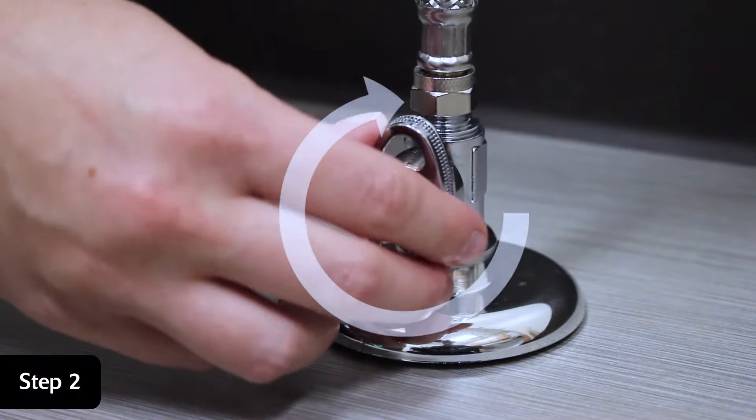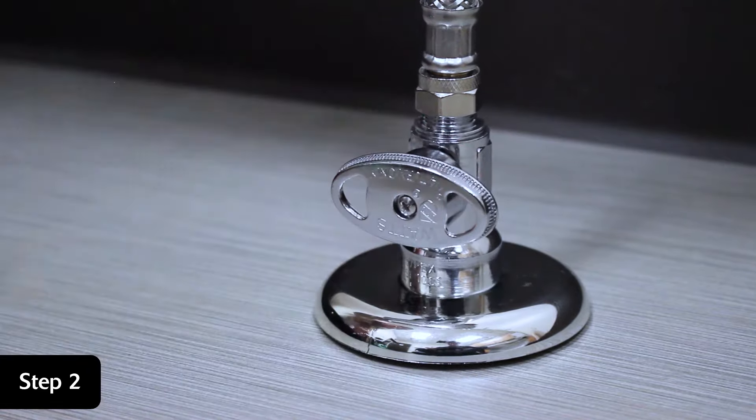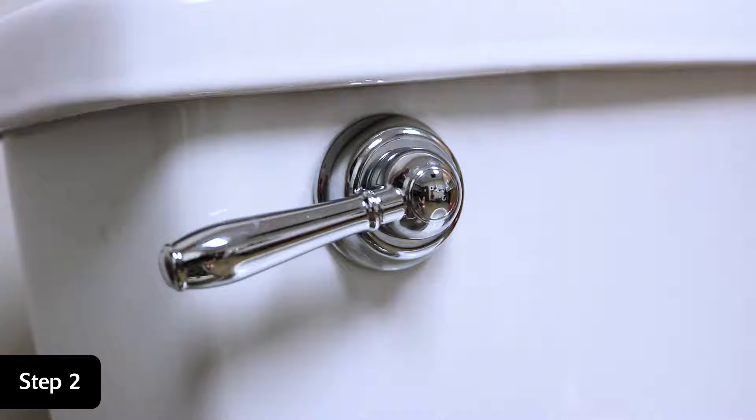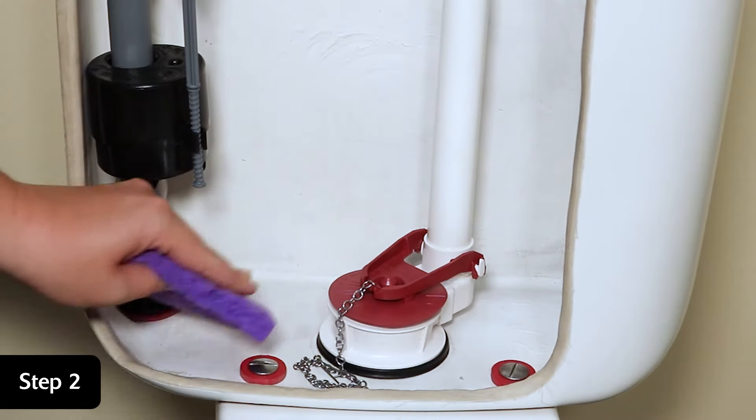The first step is to shut off the water supply to your toilet. Hold the handle down to drain the excess water. Sponge out the remaining water in your toilet tank.